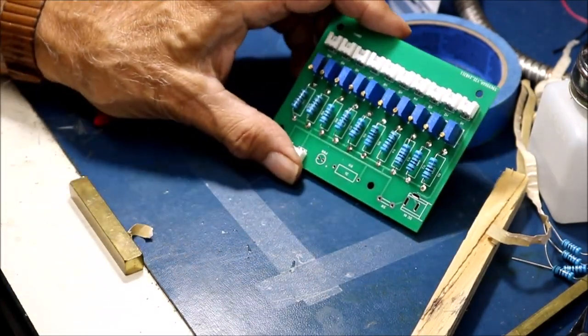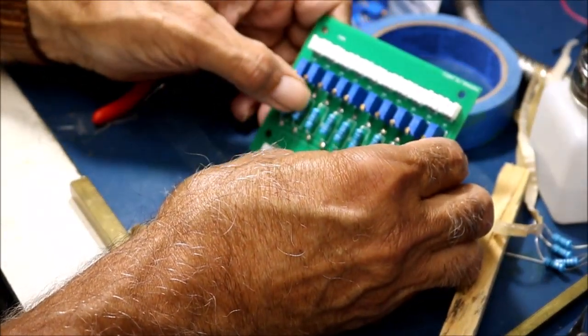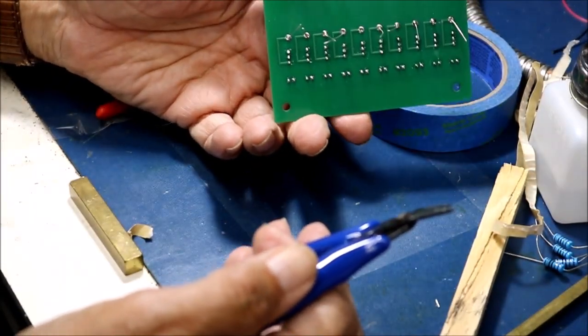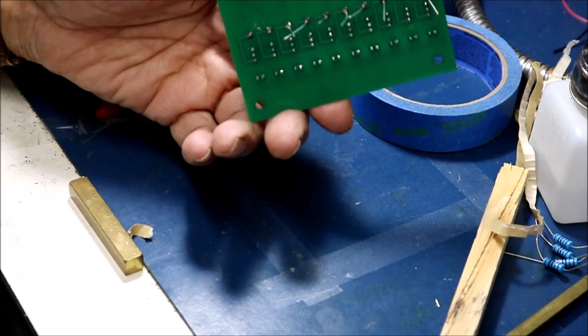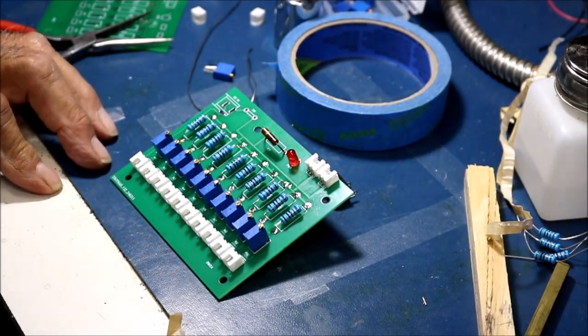This is what it looks like. The resistors are all soldered in, more or less aligned. And now I'm going to cut the leads off the back, just like I did with the pots. Okay, we're just about done here.